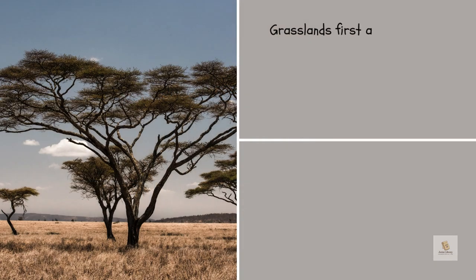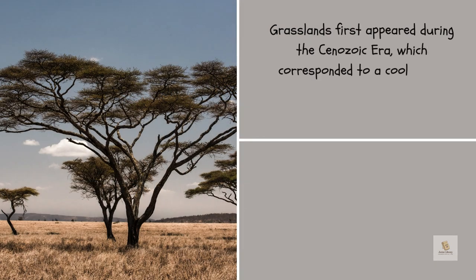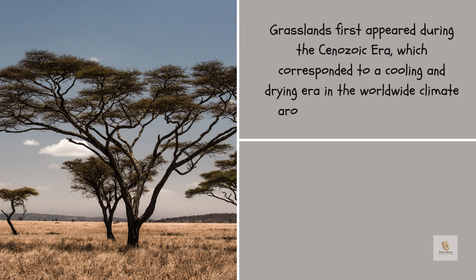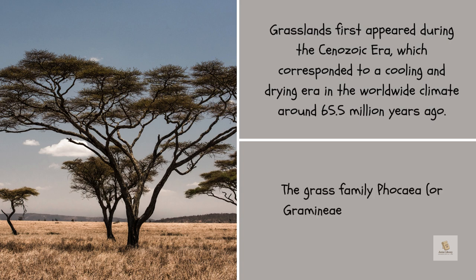Grasslands first appeared during the Cenozoic era, which corresponded to a cooling and drying era in the worldwide climate around 65.5 million years ago. The grass family Poaceae, or Gramineae, developed during the Cenozoic era.